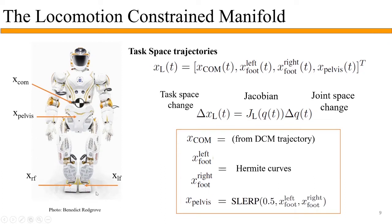To mirror the locomotion approach in the NASA Valkyrie robot, the pelvis orientation is set to be the average orientation of the two feet. Combined, these form the task space trajectories for locomotion. Thus, task space changes along the trajectory are related to joint space changes via a Jacobian matrix, and this equation fully defines the locomotion constraint manifold.